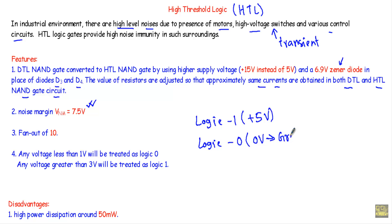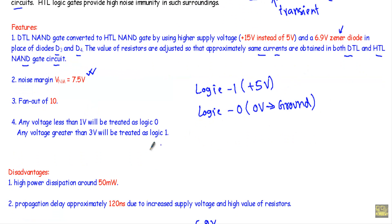There are some disadvantages of HTL logic gates. As we will increase the amount of supply voltage, and to get the same currents in the HTL logic circuits like DTL logic circuits, we will increase the value of resistor. Therefore in the circuit we will get high power dissipation and it will be around 50 milliwatts.